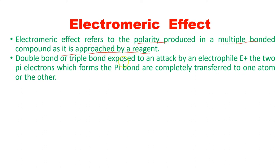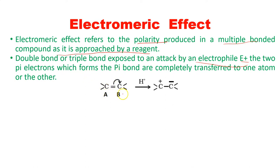When the double bond or triple bond is exposed to an electrophile — that is E, an electron-deficient species — the two pi electrons which form the pi bond are completely transferred to one atom. For example, atoms A and B are two carbons. Before there was no polarity, but polarity is produced when the electrophile H+ approaches the compound. There are two bonds: sigma and pi. The pi bond will always break because it is the weakest bond compared to sigma.